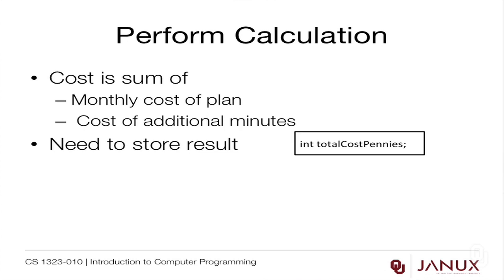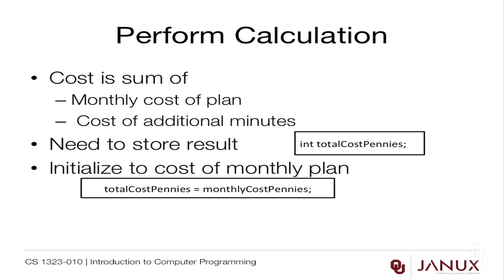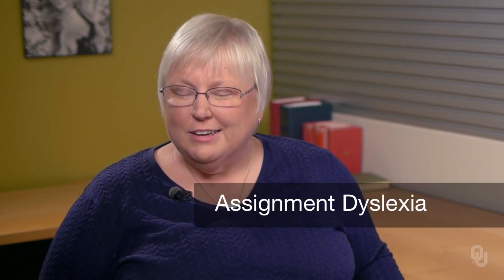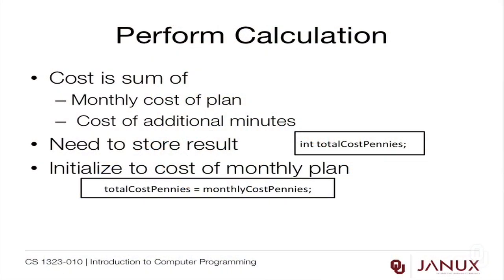We'll declare int total_cost_pennies — notice I'm keeping "pennies" in the name because I'm storing it as an integer. We initialize it with: total_cost_pennies = monthly_cost_pennies. Remember that assignment works from right to left — the value on the right gets stored into the variable on the left. It's common for new programmers to get confused about this; it even has a name: assignment dyslexia. So pay attention to which side is right and which is left, because it really matters.